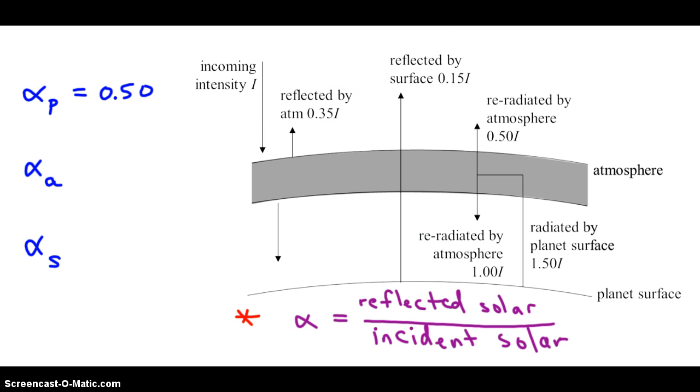Next up is the albedo of the atmosphere alone. The numerator is where we put how much solar radiation just the atmosphere reflects. The atmosphere only reflects 0.35i. We don't count that, because that's not reflection by the atmosphere. What's the incident solar radiation on the atmosphere? Well, all i of it, of the solar radiation, hits the atmosphere, so the denominator is i. The i's cancel out, and we get 0.35. 35% of the solar radiation striking the atmosphere is reflected, whereas 50% of the solar radiation striking the planet on the whole is reflected.